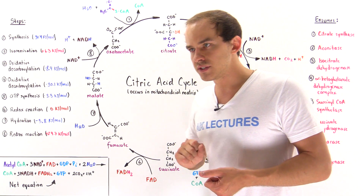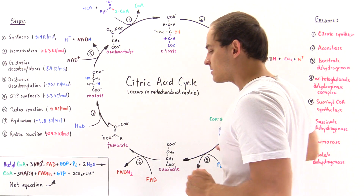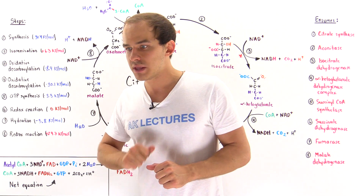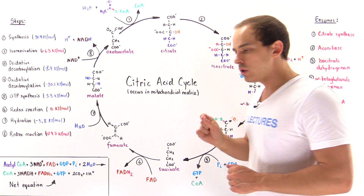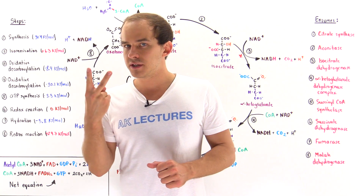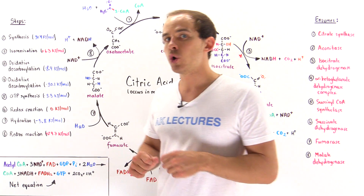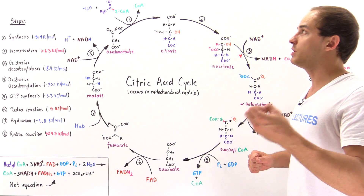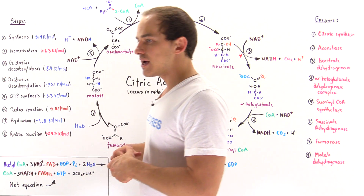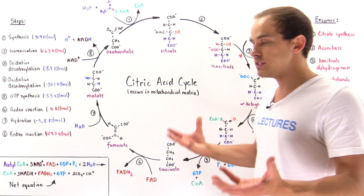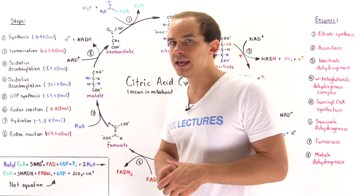Once the pyruvate moves into the matrix of the mitochondria, before it begins the citric acid cycle, we have to transform that pyruvate into acetyl-coenzyme A. Ultimately, a two-carbon component from the pyruvate is transferred onto a carrier molecule known as coenzyme A, or simply CoA. Once we form this acetyl-coenzyme A molecule in the pyruvate decarboxylation process, only then can the citric acid cycle actually begin.